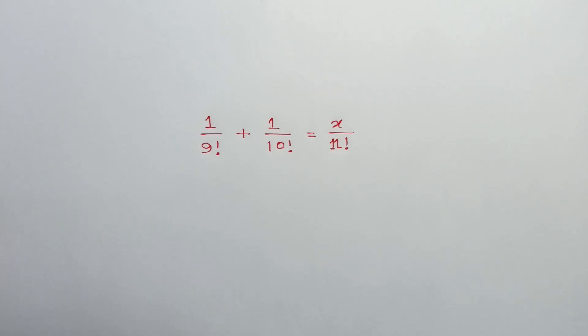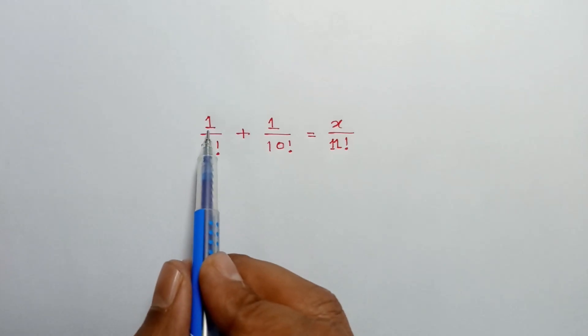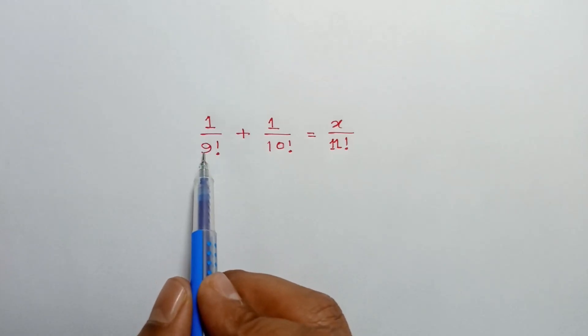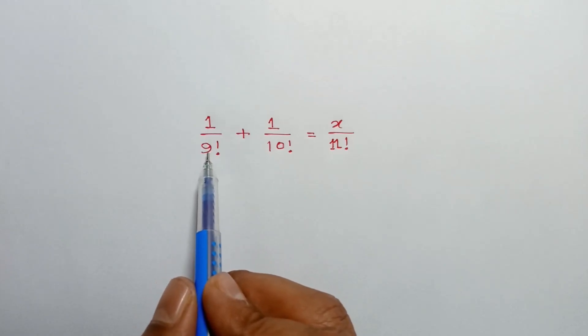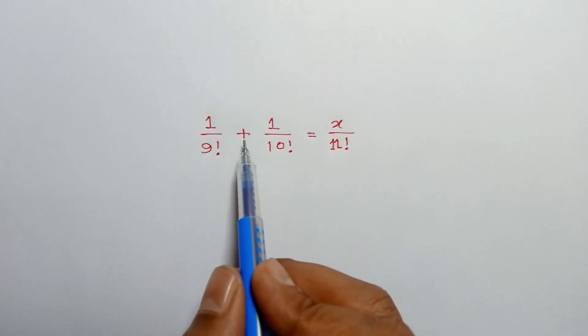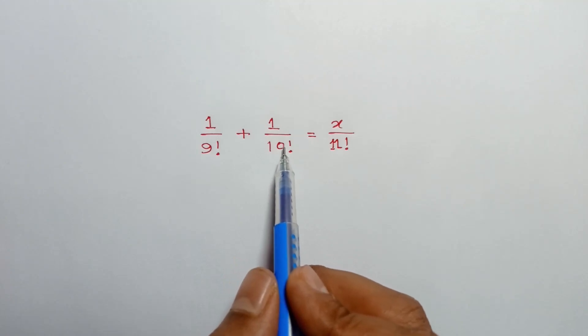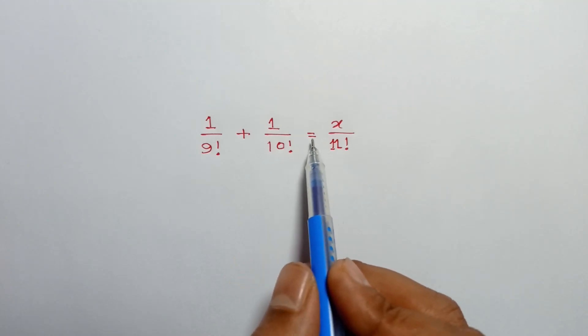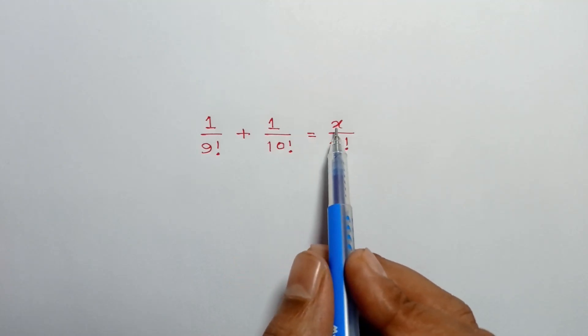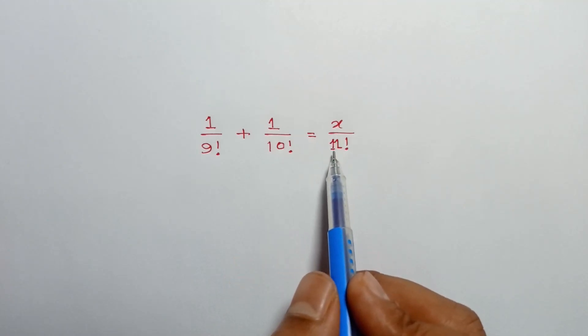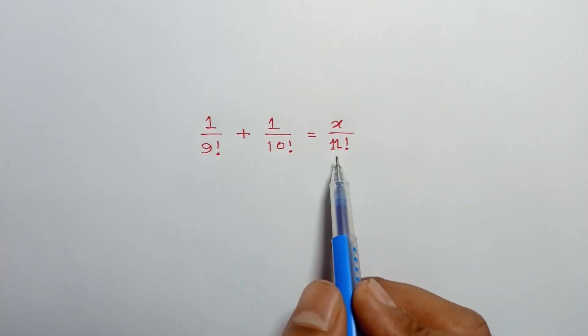Hi everyone. In this video, I am going to show how to solve n over 9 factorial plus n over 10 factorial is equal to x over 11 factorial.